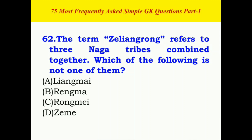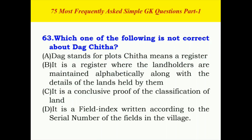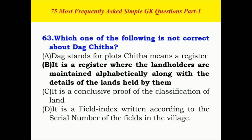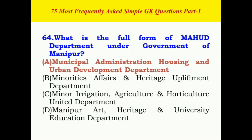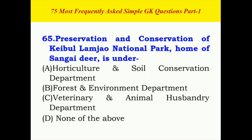The term Zeliangrong refers to three tribes combined together — the correct answer is B. Which one of the following is not correct about Dagchittha? The correct answer is B. What is the full form of MAHUD department under the Government of Manipur? The correct answer is A.